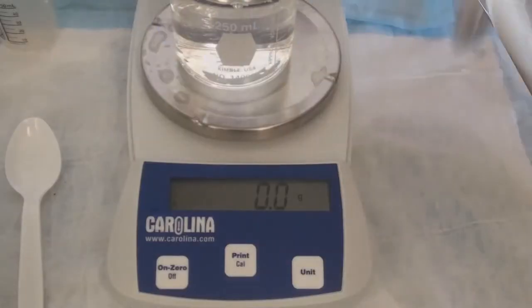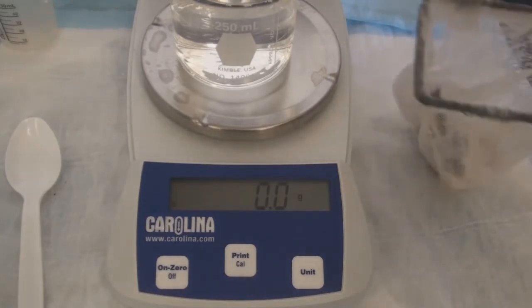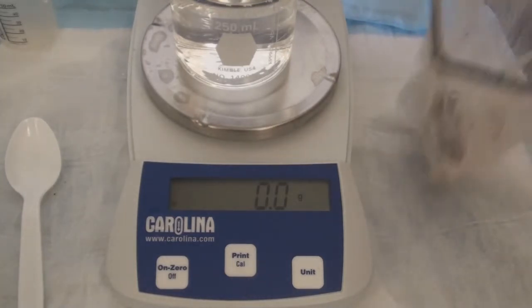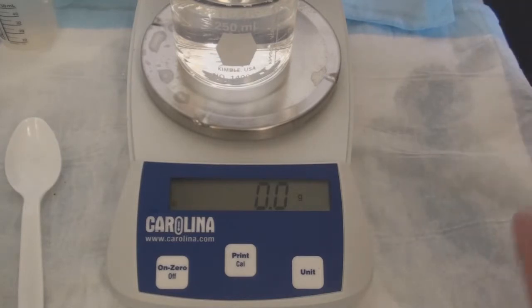We use a digital scale with a tare function and a 250 milliliter beaker with 200 milliliters of water. The beaker and water are placed on the scale and then zeroed, as seen here.